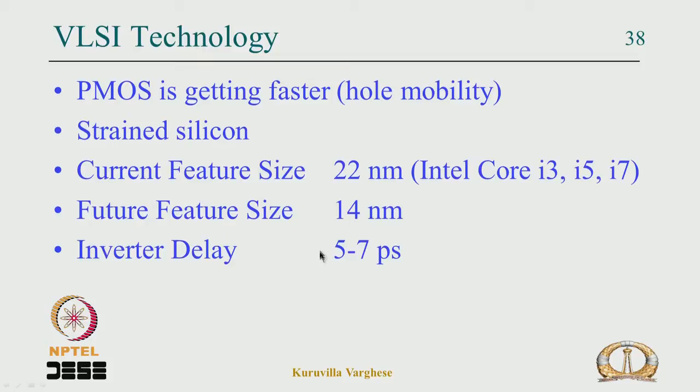The present trend is not necessarily to make things faster, as we are reaching the limits of how much the speed can scale. Instead, people are using parallel multiple cores for computation — current Intel chips have quad-core, 8-core, and so on. The focus is on having multiple computational units working in parallel whenever possible.